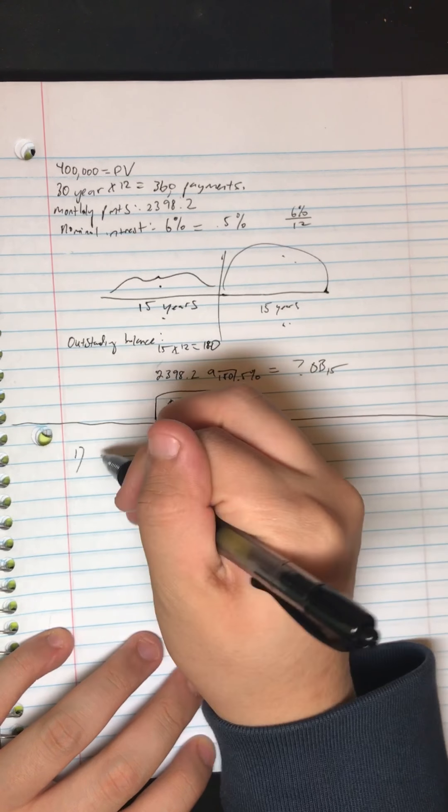When somebody sees this problem they usually panic because number one, there is no loan amount, so we don't have this, nor do we have the number of payments, so we do not have n or L. Because of this, most people try to struggle to find an equation that can fit to calculate interest but they can't seem to.